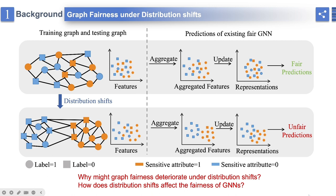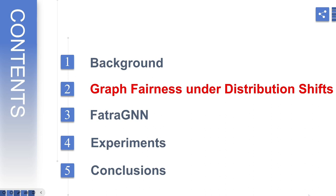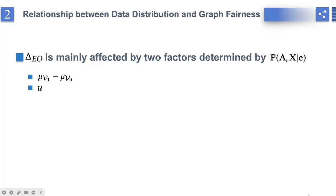Why might graph fairness deteriorate under distribution shifts? How does distribution shifts affect the fairness of GNNs? The answers from a theoretical and methodological perspective remain largely unknown. To answer these questions, we first theoretically analyze the relationship between graph data distribution and graph fairness, and find out that ΔEO is mainly affected by two key factors determined by P, A, XE.